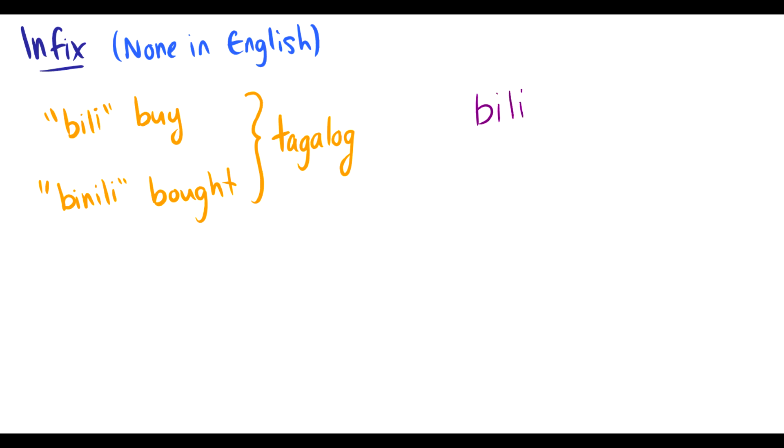And then we have binili to mean bought. So what happens here is we take b and we just add in this morpheme in the center. And what's the difference between buy and bought? Well this is present tense to buy and this is past tense for bought. So this -in- infix that goes in the middle of words is the past tense morpheme.